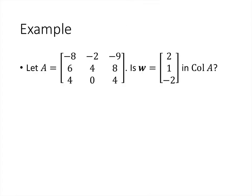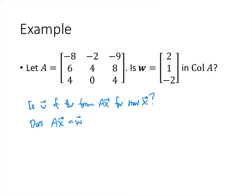So if we give you a matrix and a vector, we might ask the question: is that vector in the column space of A? Another way to think about what we're asking is: is W of the form A times x for some vector x? In other words, does A times x equals W have a solution?